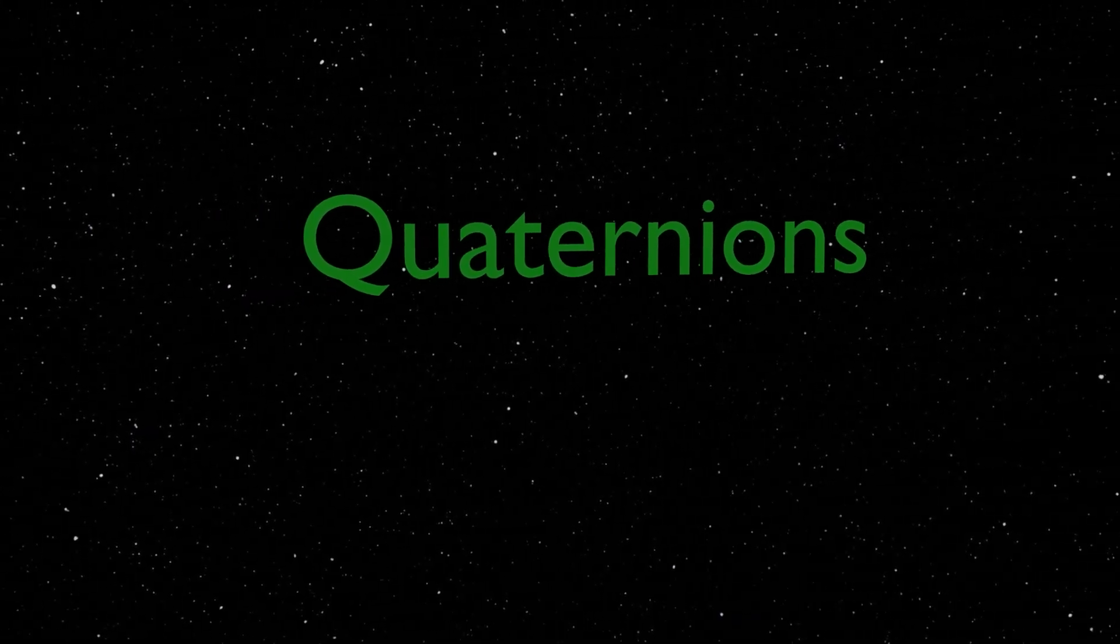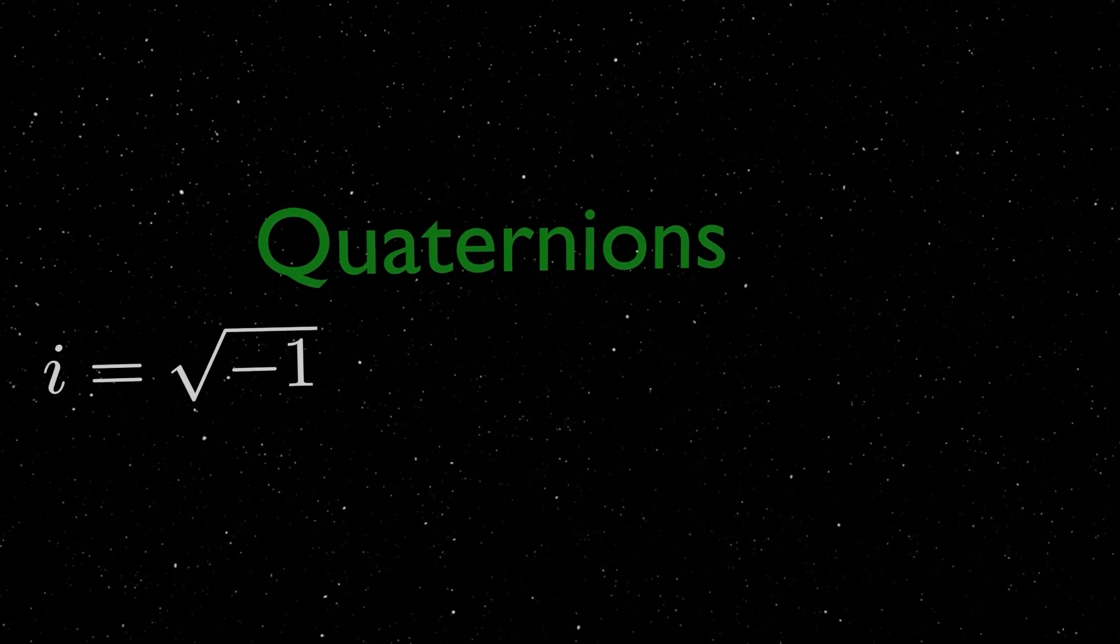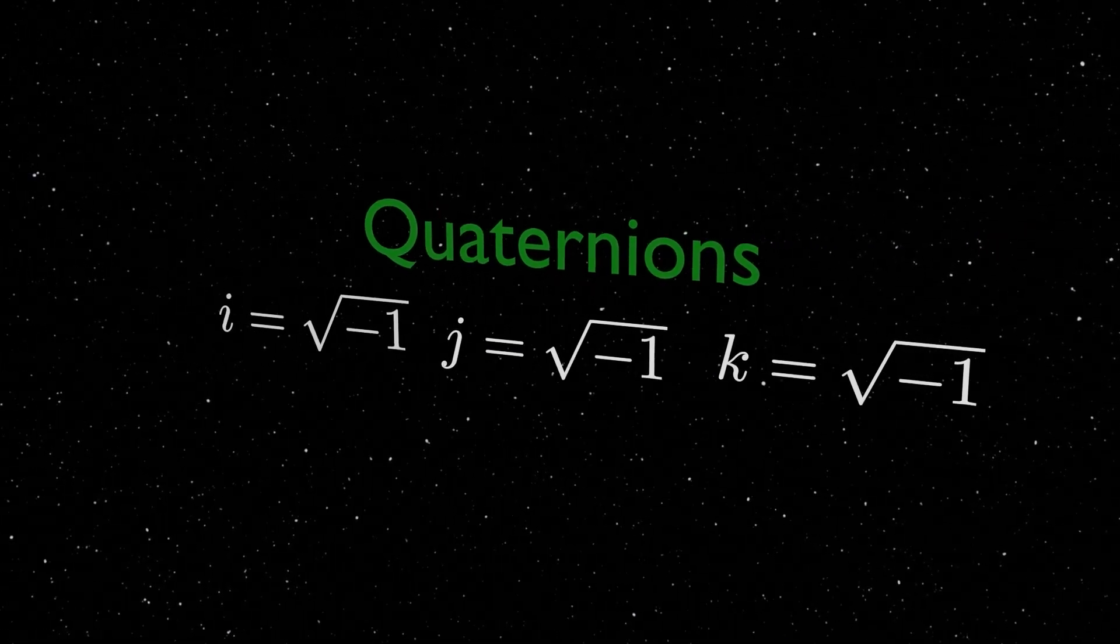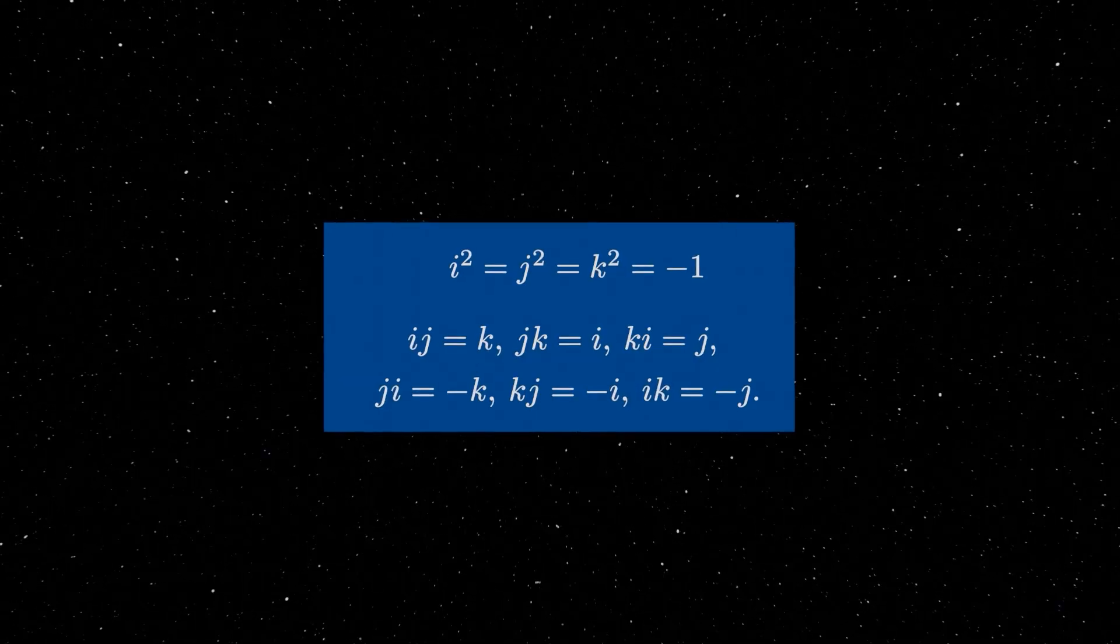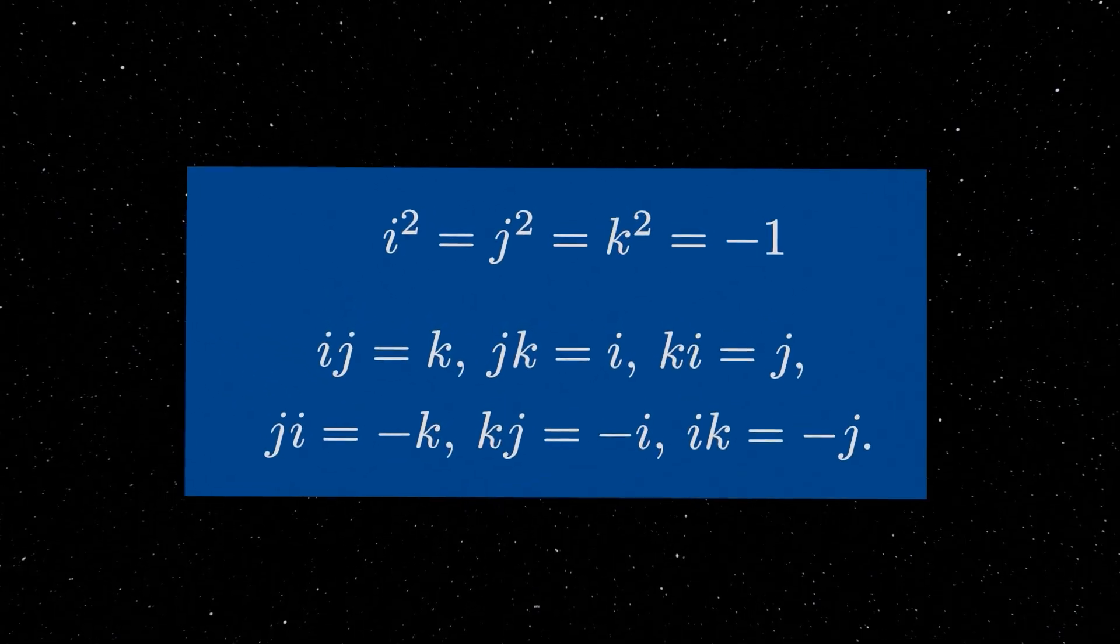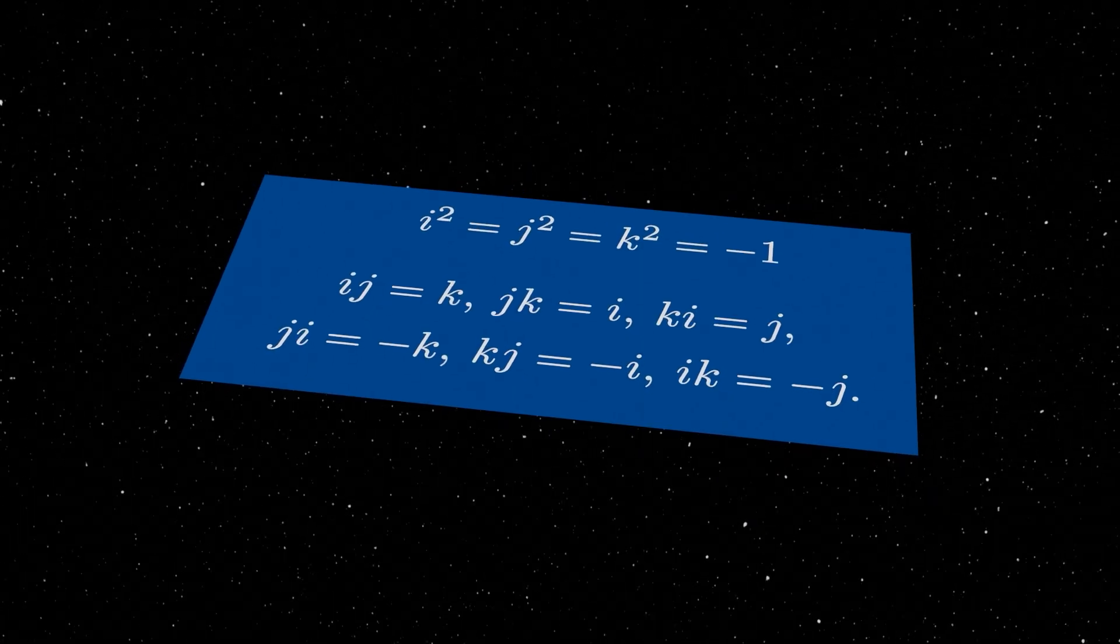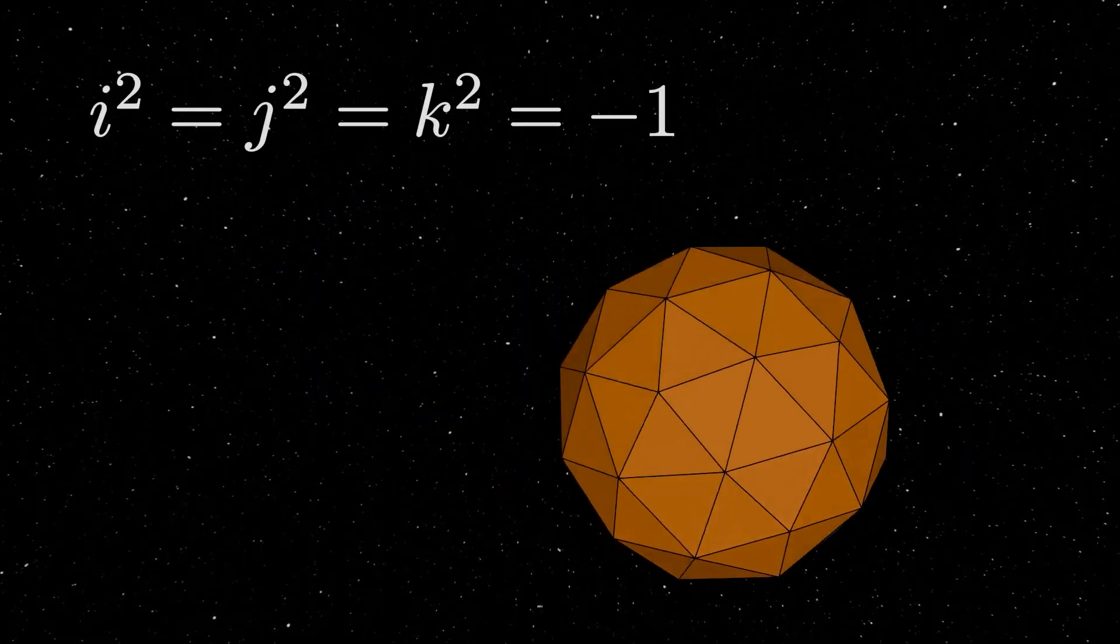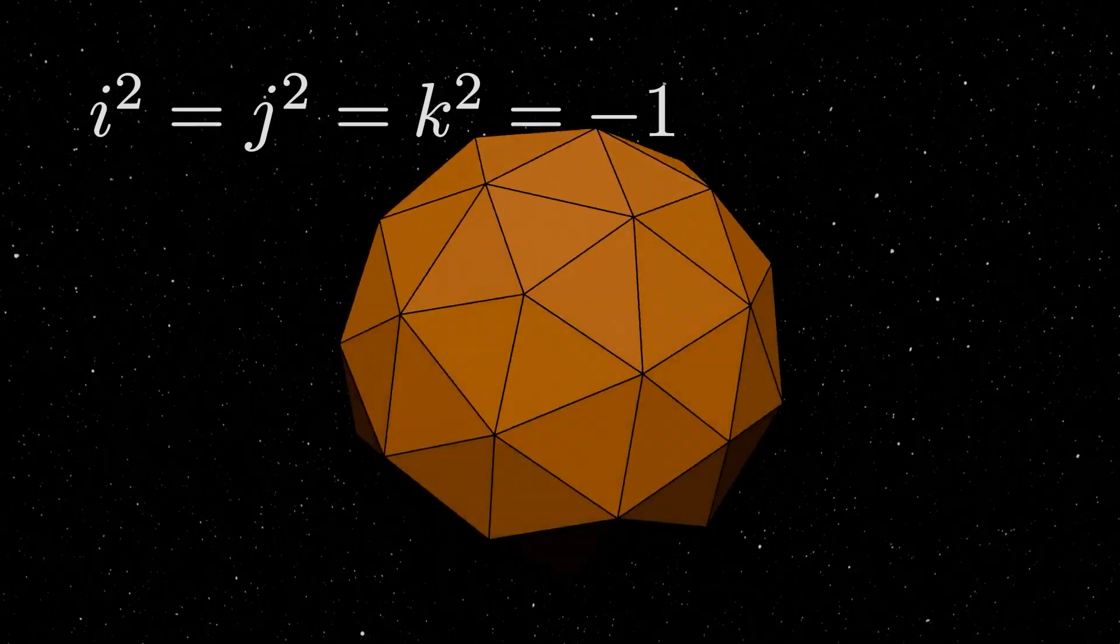This is a number system that is similar to the complex numbers, but instead of having just i as the square root of negative one, you also have two new variables, j and k, which are also square roots of negative one. The rules for multiplying between i, j, and k can be summarized by these formulas. And so, this number system looks a lot like the complex numbers, but with extra square roots of negative one. The quaternions turned out to elegantly describe rotations in three dimensions, solving Hamilton's original problem.